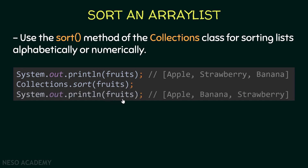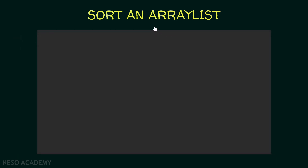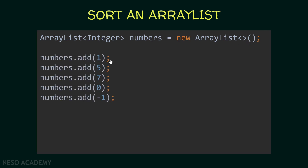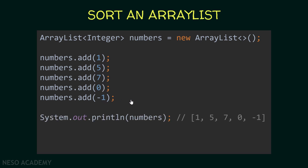After sorting, I'm printing the fruits ArrayList again, and as you can see the elements are now sorted alphabetically. Now let's see another example — let's create an ArrayList of integers. We declare an ArrayList of integers, call it numbers, and allocate it in memory. Then we add elements using the add method: we add 1, 5, 7, 0, and -1 to this ArrayList.